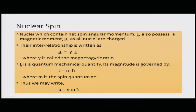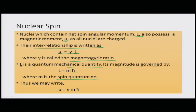Nuclei which contain net spin angular momentum L also possess a magnetic moment μ. Since all nuclei are charged, their interrelationship is written as μ = γL, where γ is the magnetogyric (or gyromagnetic) ratio. L is a quantum mechanical quantity with magnitude L = mℏ, where m is the spin quantum number, so we may write μ = γmℏ.